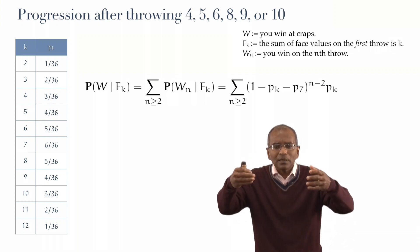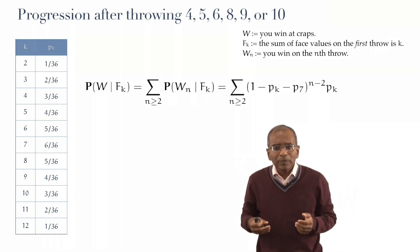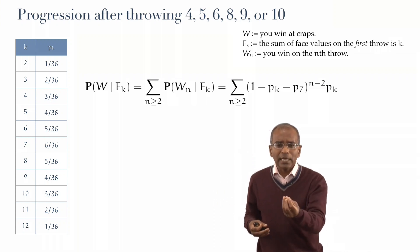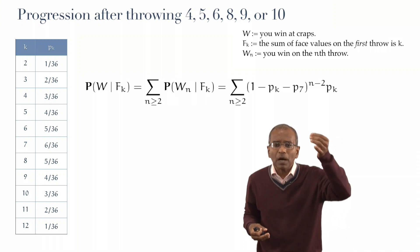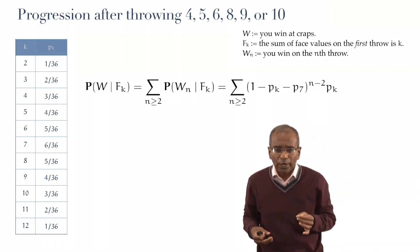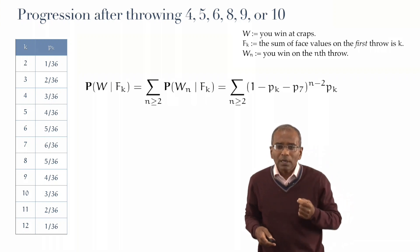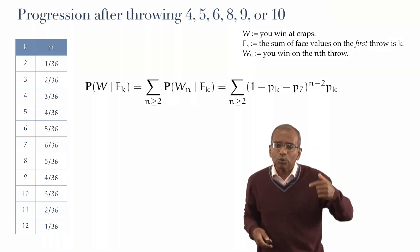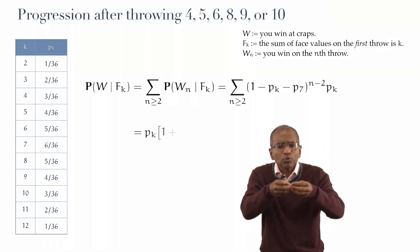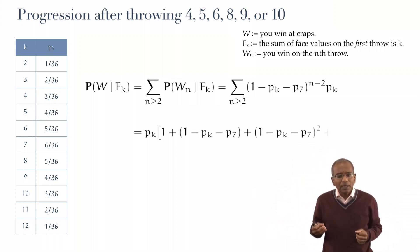Well, they are, it's a sum of powers. Powers, the sum starts at n equal to 2, but the power is n minus 2, so the first power is 2 minus 2, or 0. The next power is 3 minus 2, or 1. The next power is 4 minus 2, or 2. In other words, what you've got, just writing out the sum, is Pk times 1, power 0 gives you 1, power 1, power 2, power 3, and so on, ad infinitum.